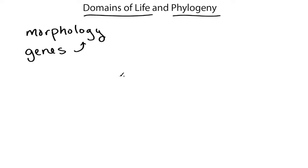Genes also work well for tracing the phylogeny or evolutionary history of single-celled organisms like bacteria, where morphology isn't very useful. So I'm going to talk about genetic phylogeny and what that tells us about the domains of life, or the major groupings of life that we've observed on Earth.